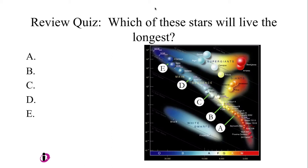The question is, which of the stars listed, A, B, C, D, or E, will live the longest from the time they're born until the time they burn out of hydrogen. So what do you think?